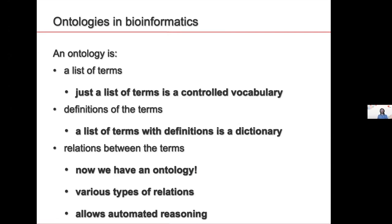If you have a list of terms with definitions, this is a dictionary. And if we have relations between the terms, then we have an ontology. For example, I'm not only saying I'll use the word 'cerebellum' and giving it a definition — I'm also saying the cerebellum is part of the brain. There are various types of relations, and these allow automatic reasoning: if I want all genes expressed in the brain, and a gene is annotated as expressed in cerebellum, I can recover it because anything expressed in cerebellum is expressed in brain.